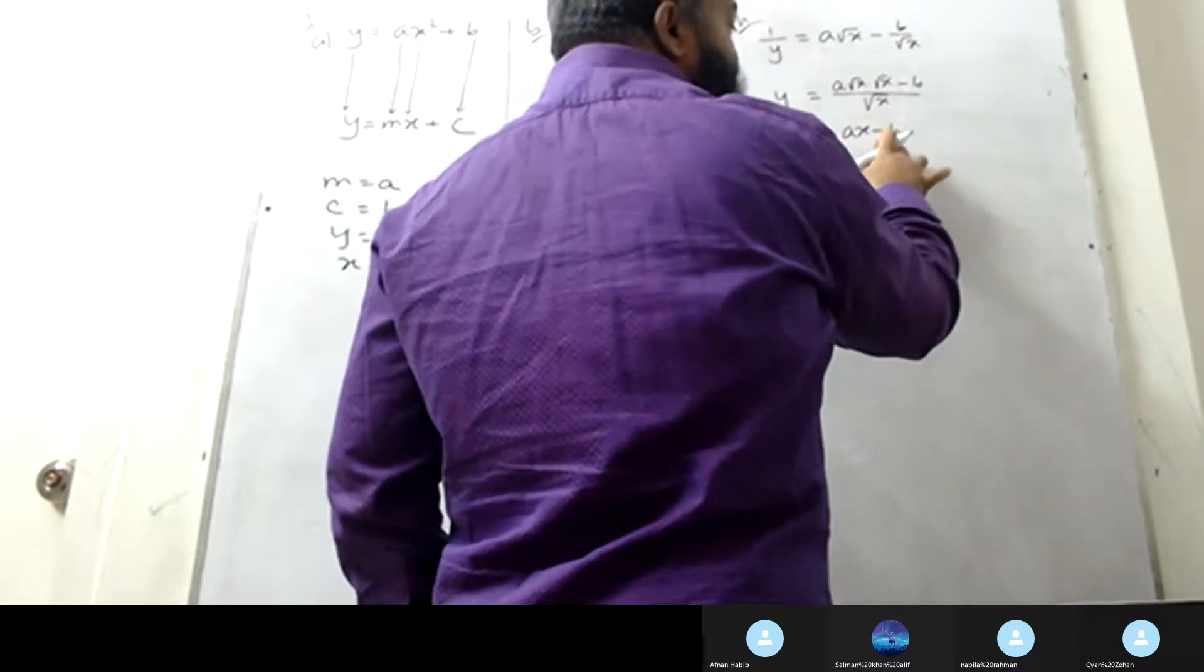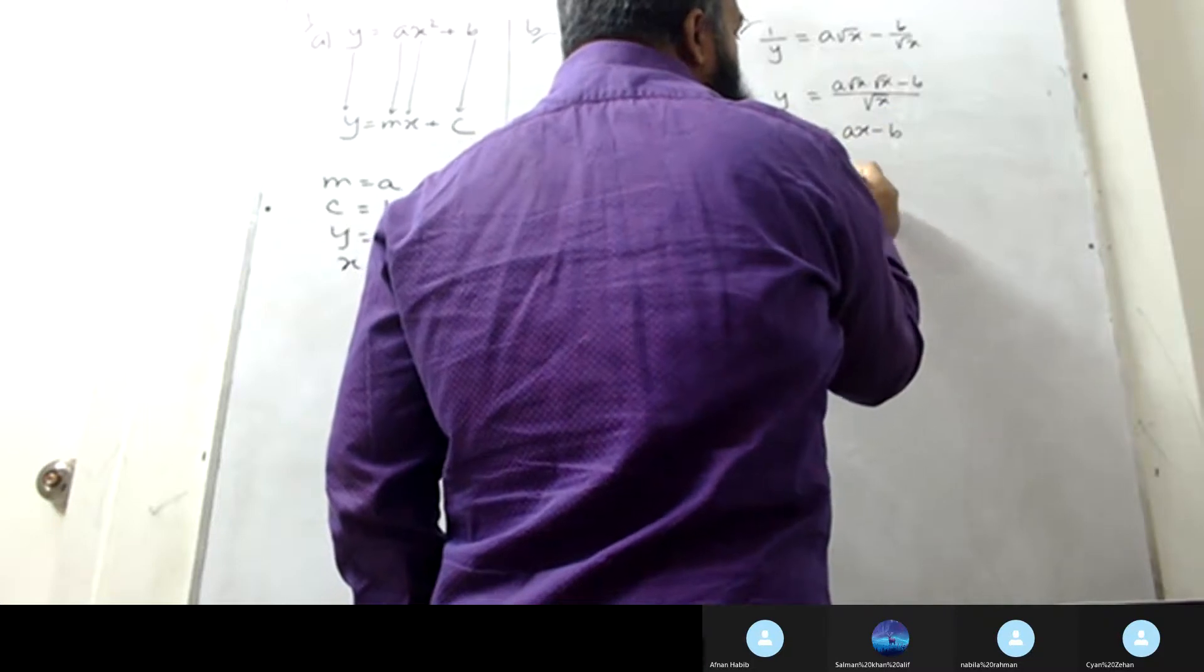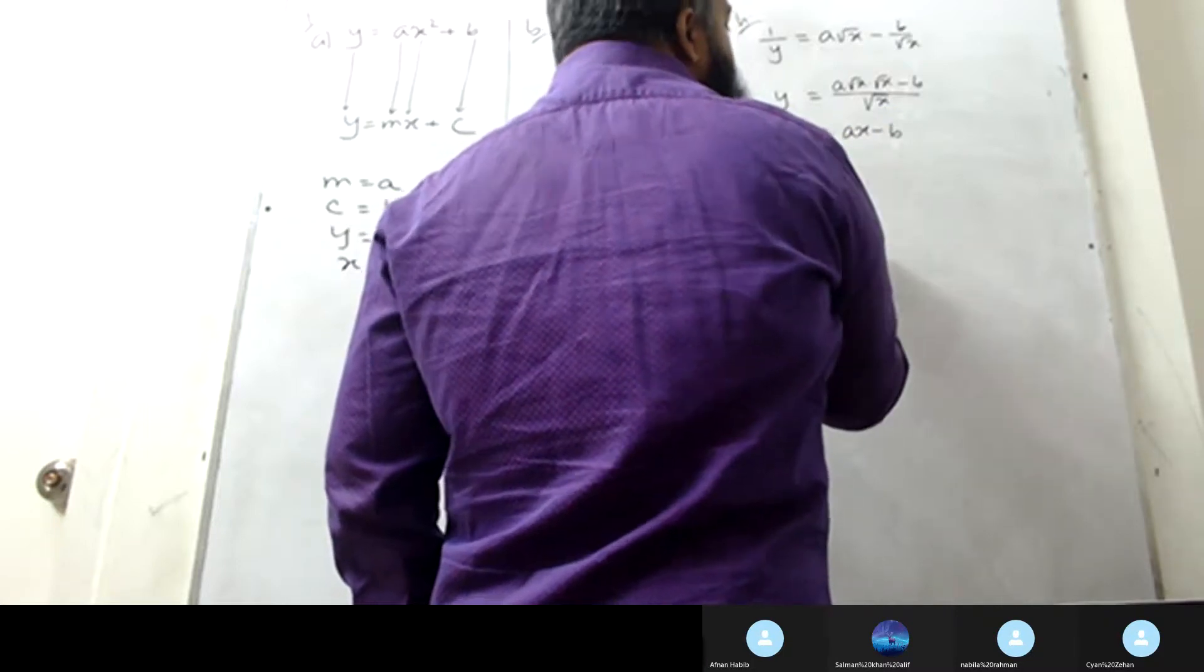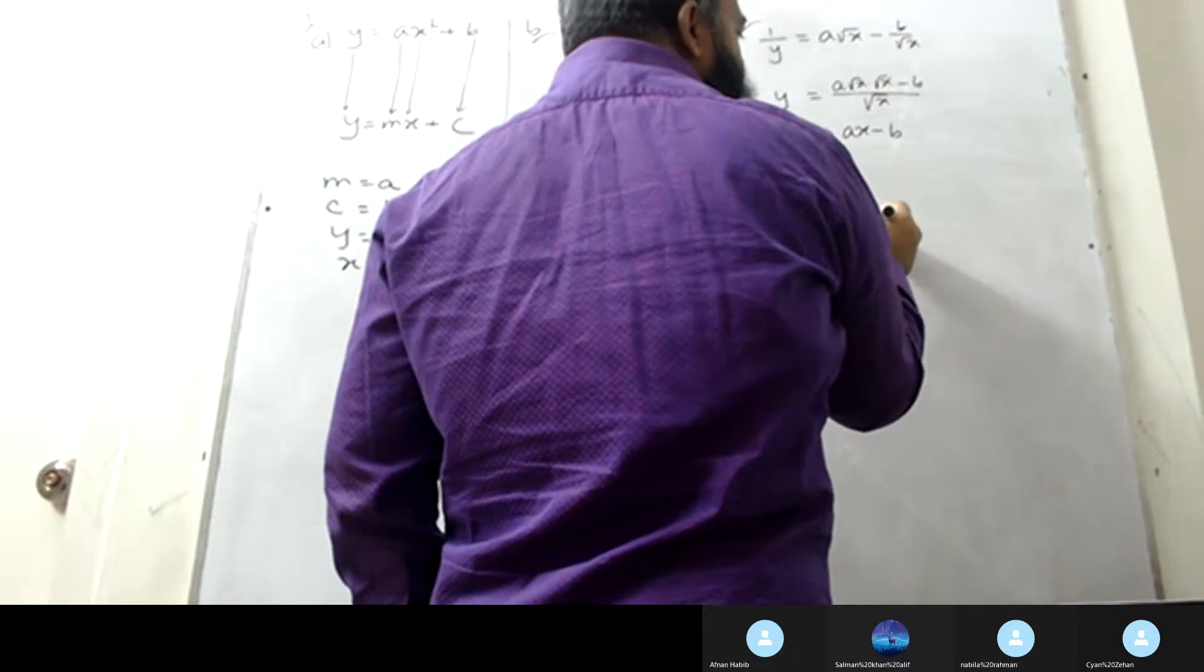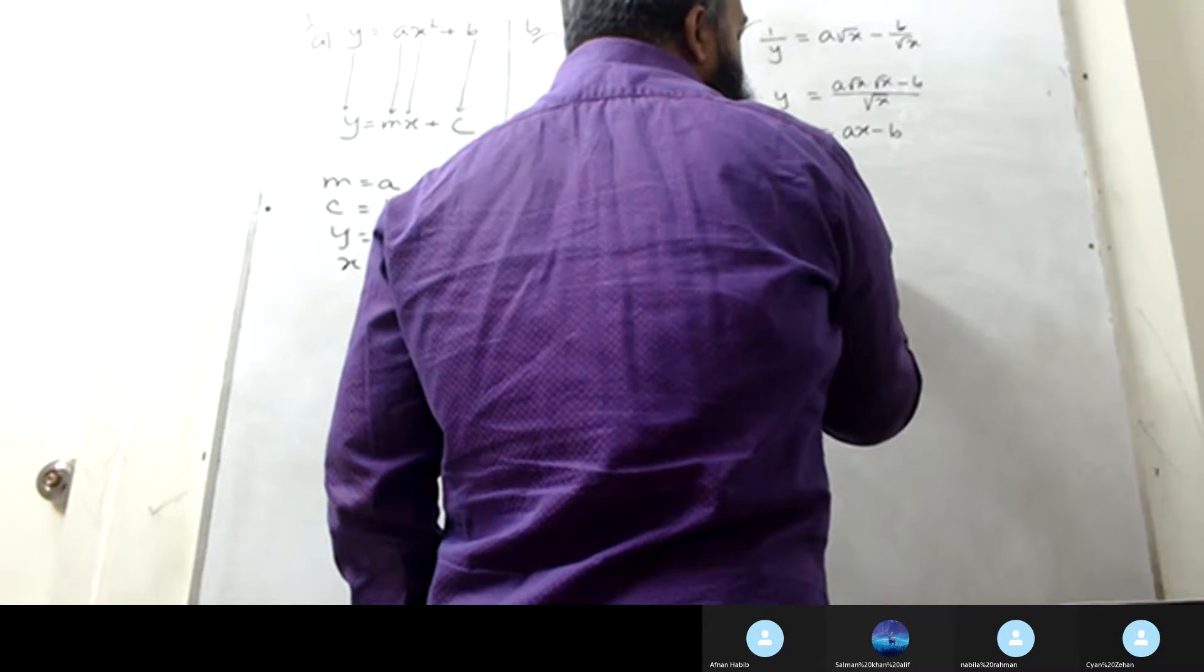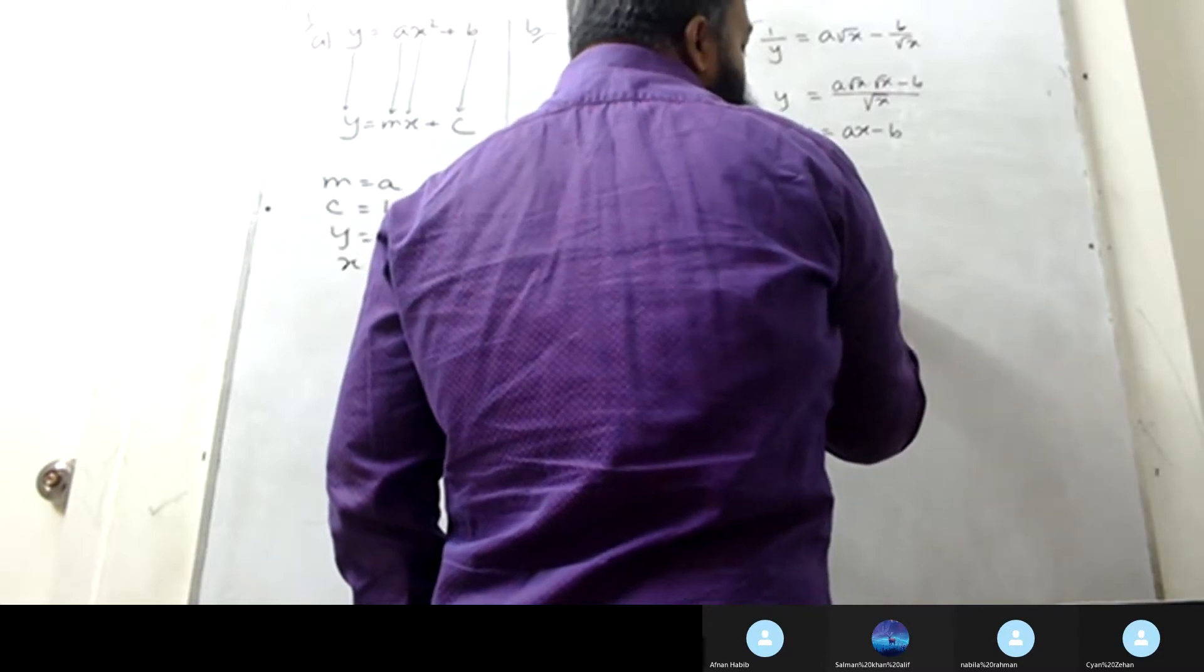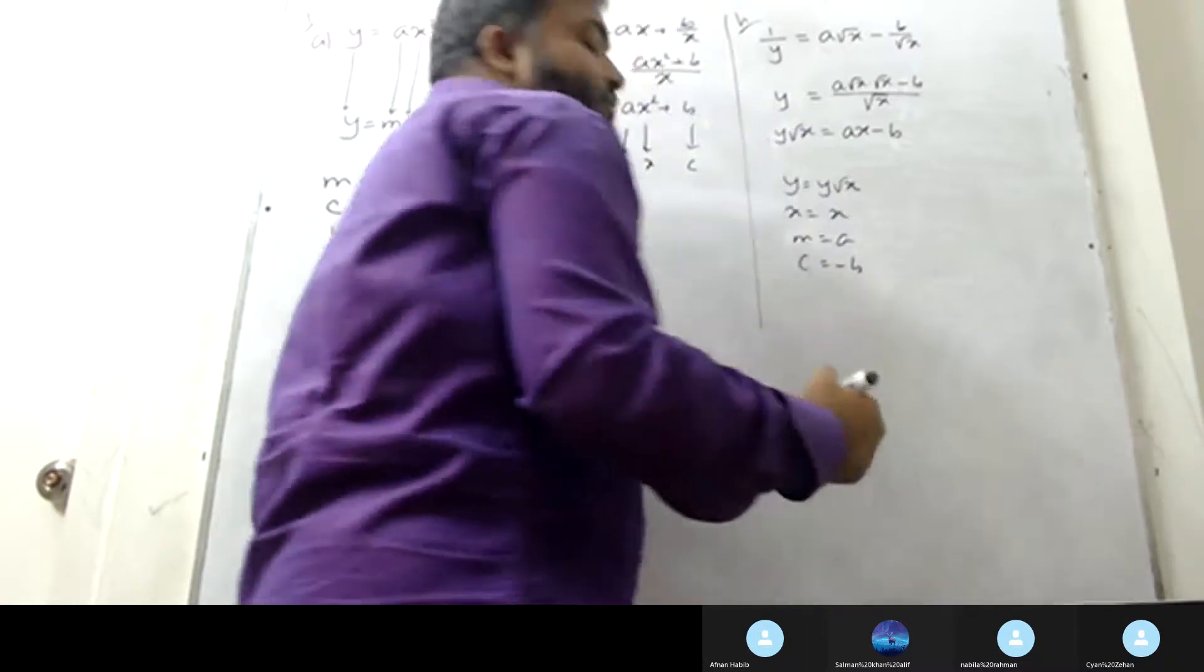For this equation, y represents root over x square, x represents x, m represents a, and c represents minus b.